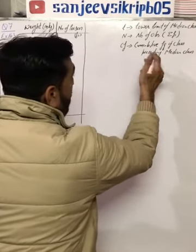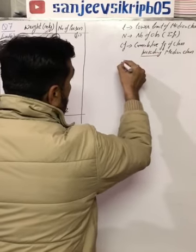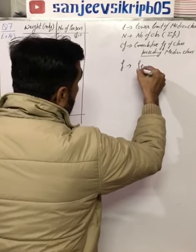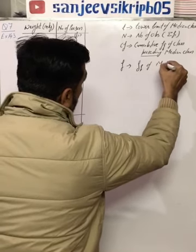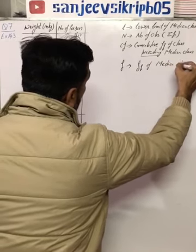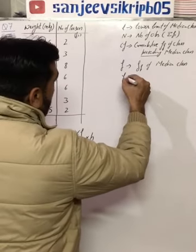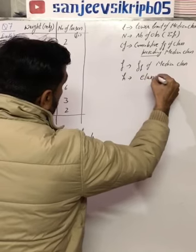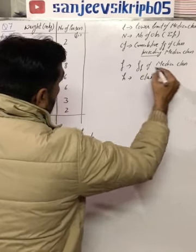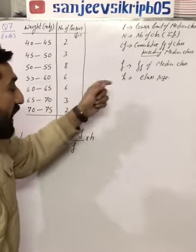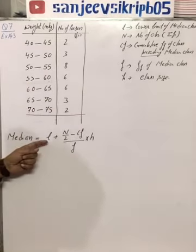Then F is the frequency of median class, and the last is H, that is class size. So I hope you understand these terms. Before putting the values of these terms...